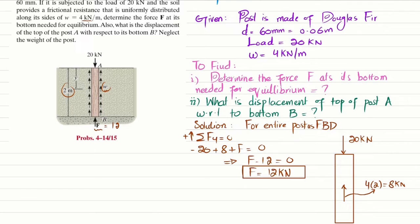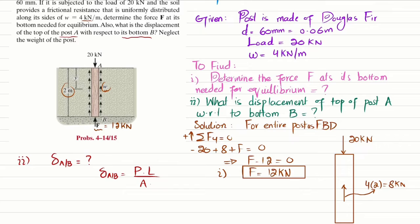Now we move to Part 2, where we find the displacement of point A with respect to point B — the top of the post with respect to its bottom. We know the displacement formula is delta = P times L divided by A times E. However, there is a uniformly distributed frictional load along the side, so at every position along the post the internal force changes. The force is a function of y.